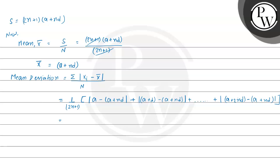Solving each term: A and A cancel, giving |−ND| = ND. The second term gives |D − ND| = D|1−N|, or equivalently D(N−1). Similarly each term simplifies by canceling A, giving D(N−2), and so on. There is one middle term where the value becomes 0. Then after the middle, the terms become D, 2D, and so on up to ND.